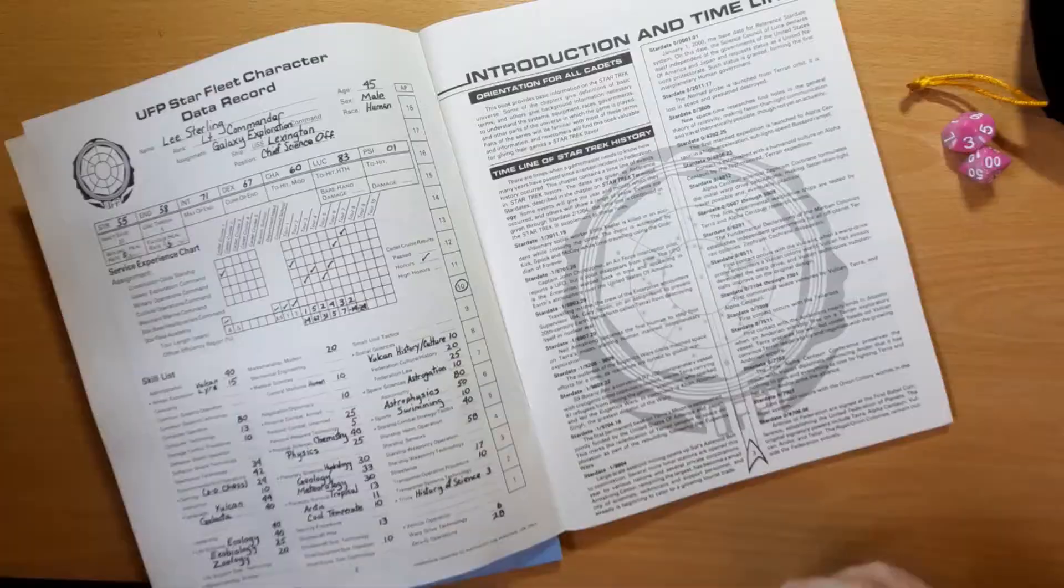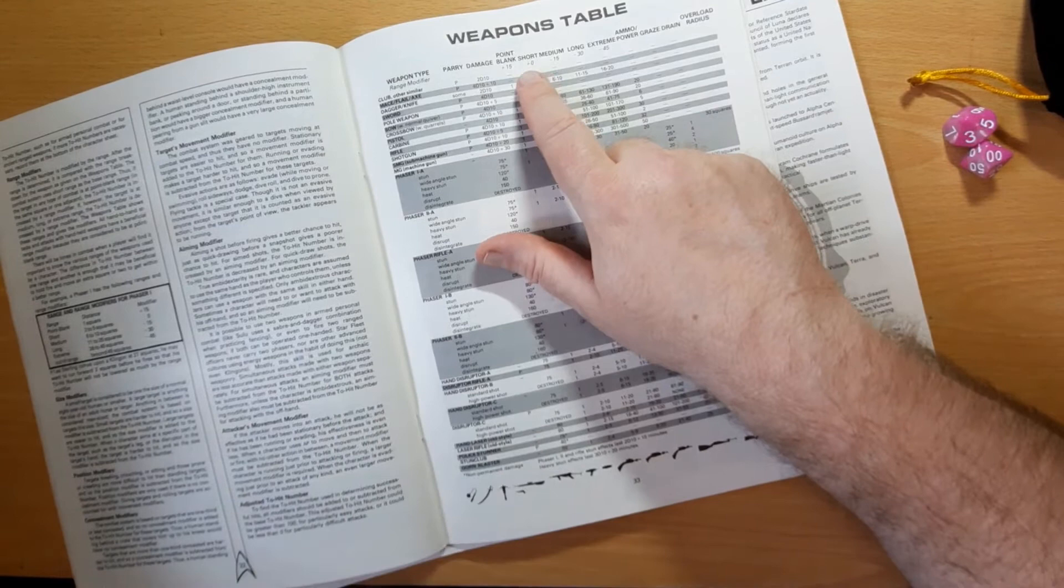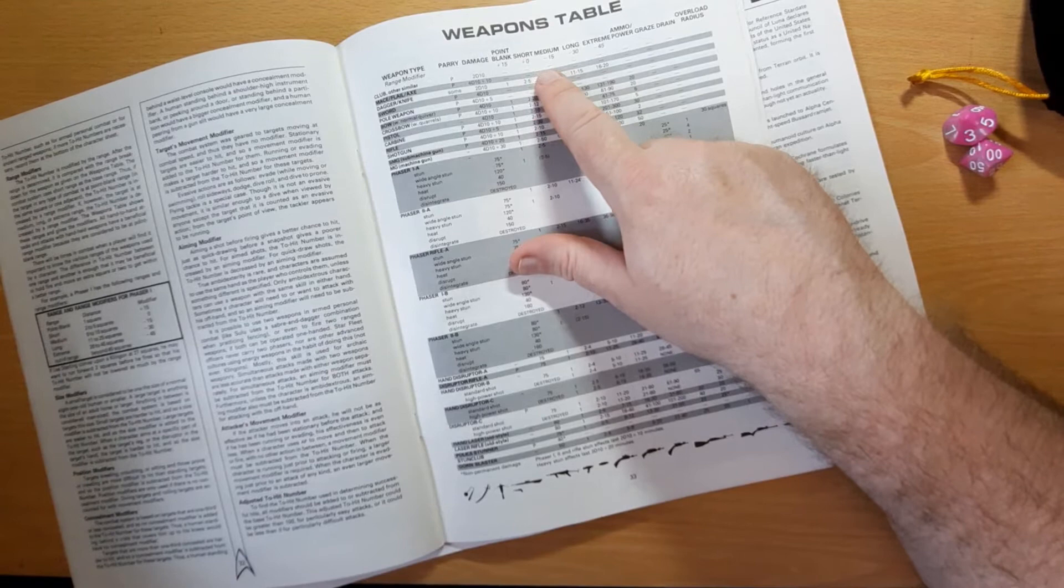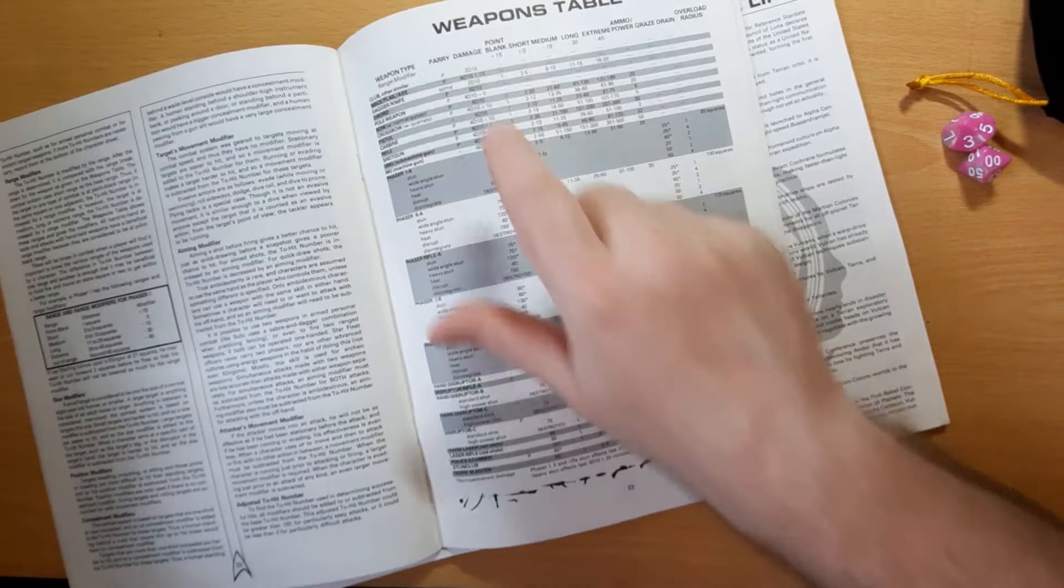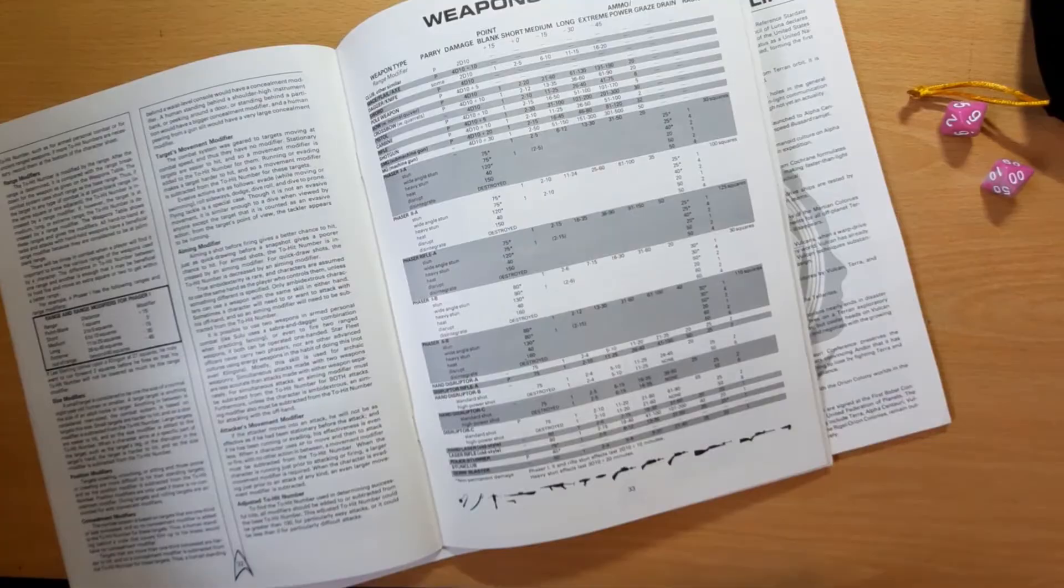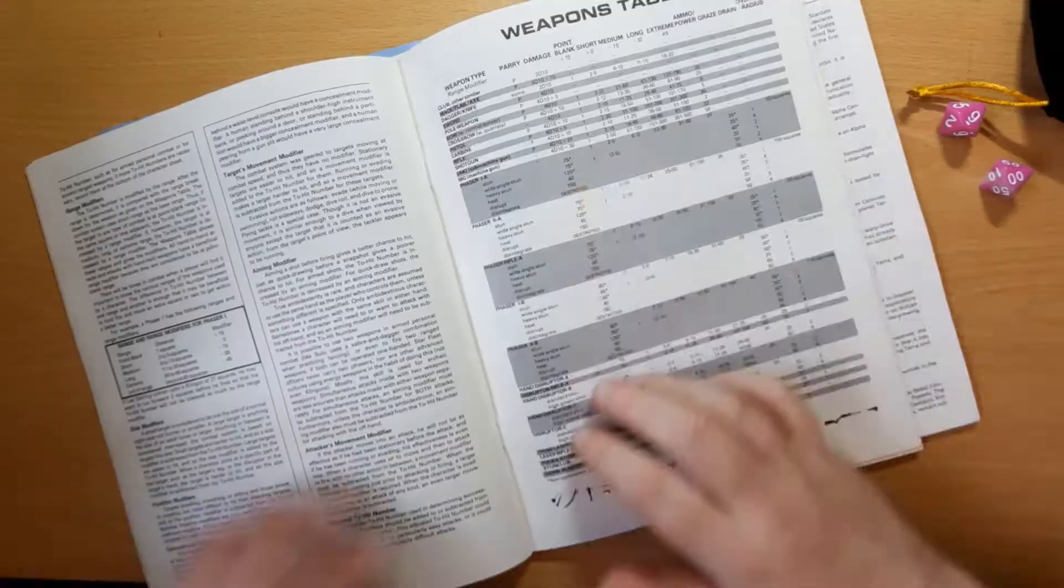Now damage is really straightforward. On page 33 of the Starfleet Officer's Manual, we can see a table with various weapons. This table also has the ranges for the weapons. You can see that firing a phaser at point blank range gets you a plus 15 bonus, whereas short, medium, long, extreme all have increasing difficulties until minus 45 extreme range. But we're looking at the damage here. Hitting someone with a club does 2d10 damage. So you roll 2d10, add them together - that's 13 points of damage. However, many of the energy weapons have fixed amounts. A phaser 1 does 75 points of damage.